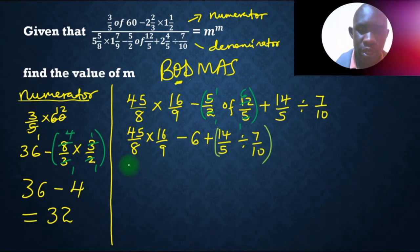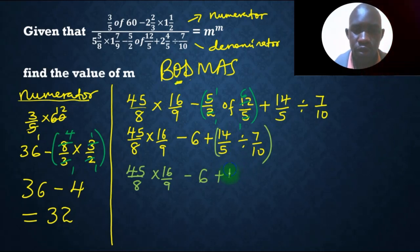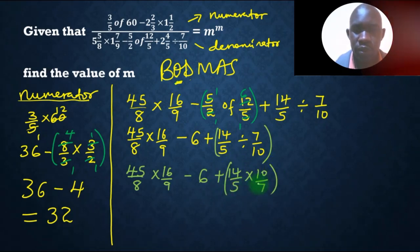And this will be written as 45 over 8, times 16 over 9, minus 6, then plus, if we work out this, it will be 14 over 5, multiplied by 10 over 7. Whereby, by 5, 1, by 5, 2, by 7, 1, by 7, we get 2.